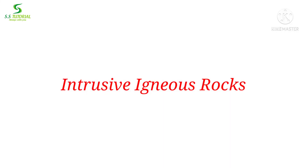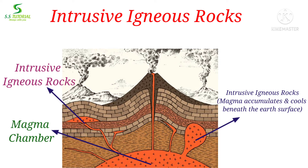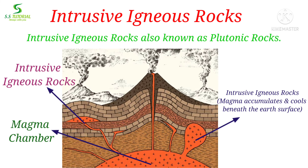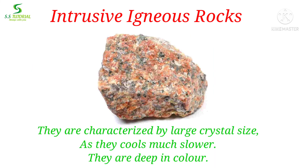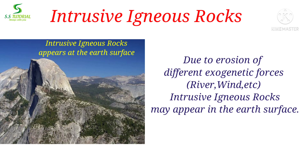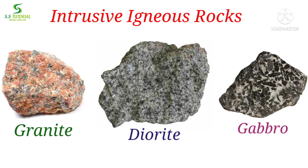When magma can't reach the surface of the earth, then sometimes magma accumulates inside the cracks of the crust. Then over time magma slowly cools, crystallizes and solidifies, and forms rocks. Then they are called as intrusive igneous rocks. They are also called as plutonic rocks as they originate inside the earth's crust. They are characterized by large crystal size as they cool much slower, and they are deep in color. When the earth's surface is eroded by exogenetic forces like river, wind, etc., then intrusive rocks may come out at the earth's surface. Granite, diorite, and gabbro are examples of intrusive igneous rocks.